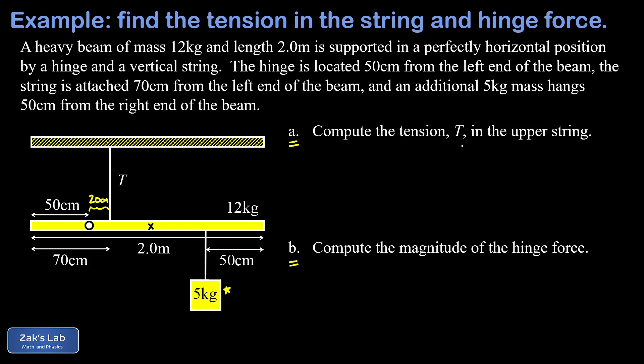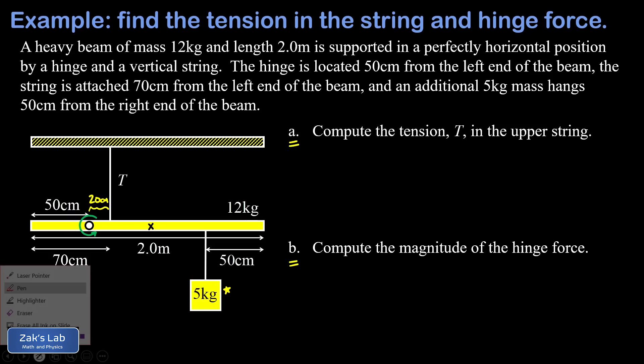So to go after the tension in this string we're going to take the hinge out of the picture by choosing a rotation axis right at the actual hinge where this rod can physically rotate and we're going to compute torques around that rotation axis. The torque exerted by the hinge force using a rotation axis of the hinge itself, well the lever arm is zero there so the hinge can't exert any torque with respect to the hinge. This means we get down to only one unknown quantity when we analyze the torques and that's the tension in the string that's what we're going after in Part A.